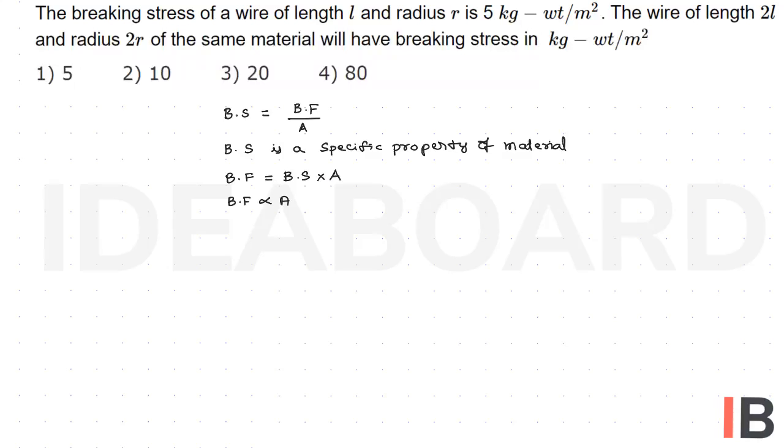As per the question, the breaking stress of the wire of length L and radius R is 5 kg-wt/m². The wire of length 2L and radius 2R is of the same material.